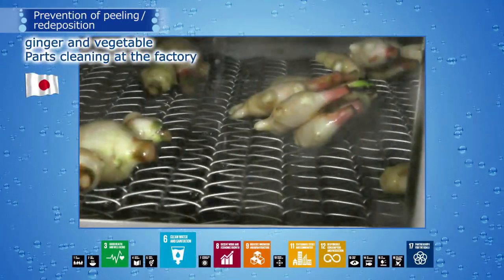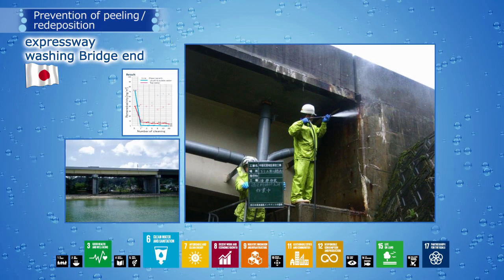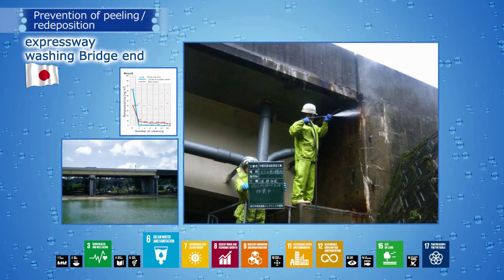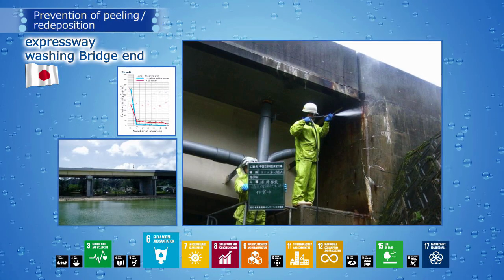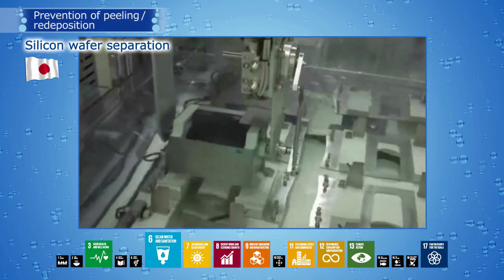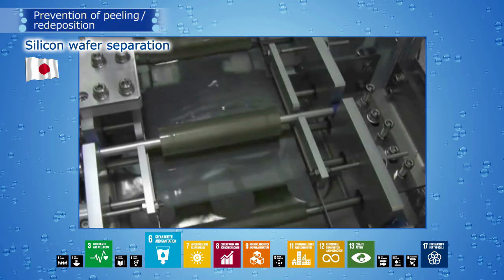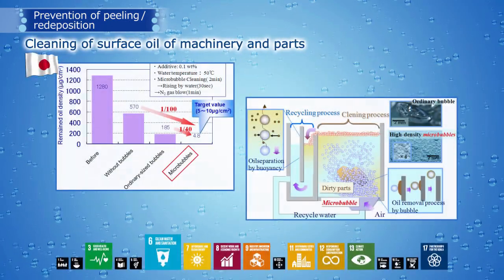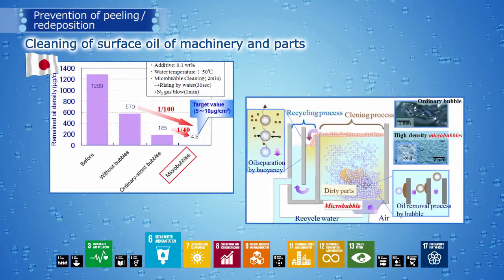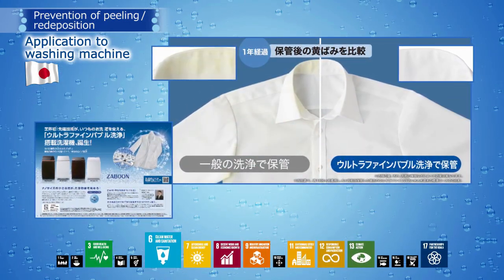In the field of agriculture and food, a test system for washing ginger by machine using fine bubble technology has been introduced. In the industrial fields of civil engineering and construction, the efficient removal of salt from bridge girders has been highly evaluated. In the solar panel and PV wafer equipment field, ultra-fine bubble technology has been introduced to practical use in the wafer separation process for solar cell substrates. Furthermore, fine bubble technology is used for cleaning surface oil on various machines and components. In the field of life science and health, fine bubble technology can reduce environmental loads.